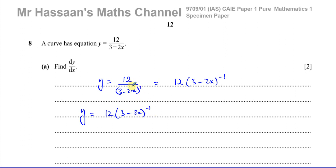If there was an x term on top we would not be able to do this and we'd have to use another method called the quotient rule. But since the numerator is just a constant with no x term, we can rewrite it in this form and differentiate using what's called the chain rule.